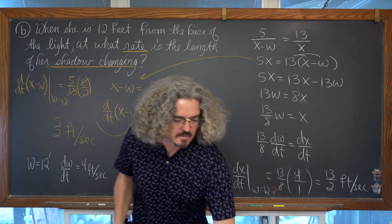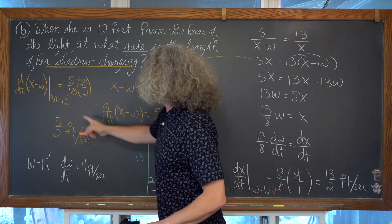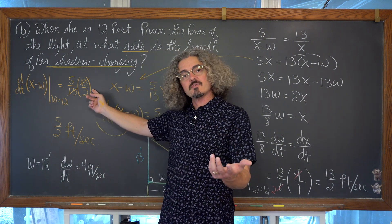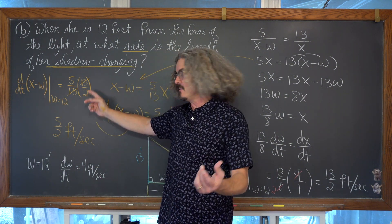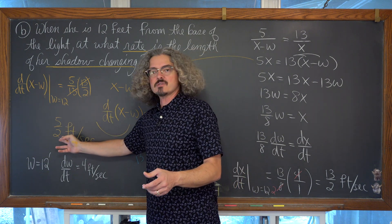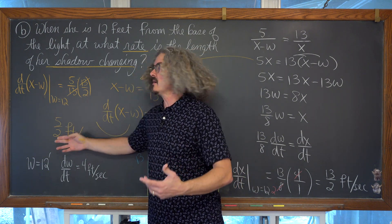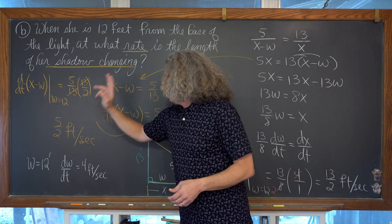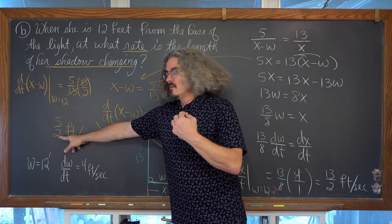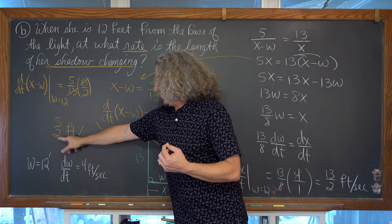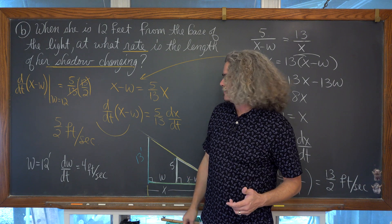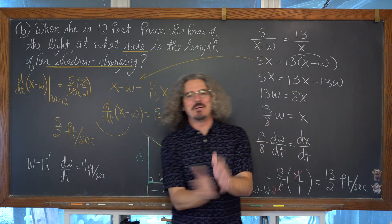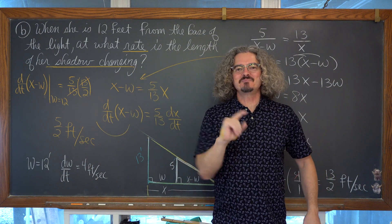That is specific for when w equals 12, except the derivative never asks us for the specific value of w. So really, as long as this person keeps walking at 4 feet per second, their shadow is going to change by 5/2 feet per second, or 2 and a half feet per second. I'm Mr. Tarrou — BAM! Go do your homework!